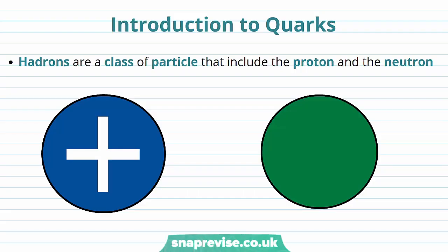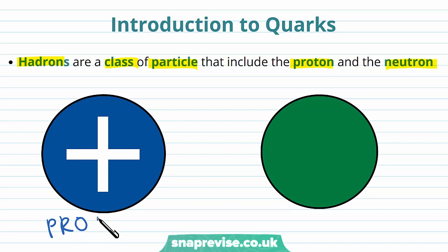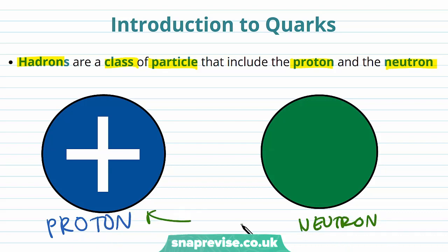First of all, we're going to introduce the idea of quarks. Hadrons are a class of particle that include the proton and the neutron. We've already come across the group of particles called hadrons, and two examples of hadrons are the proton and also the neutron. Both these particles are classified as hadrons.